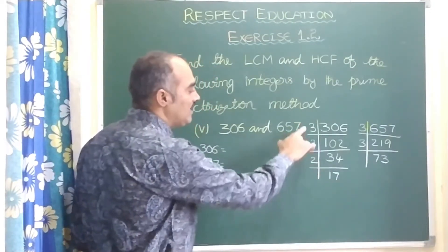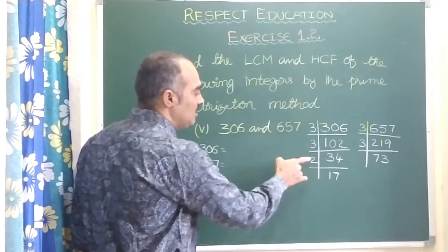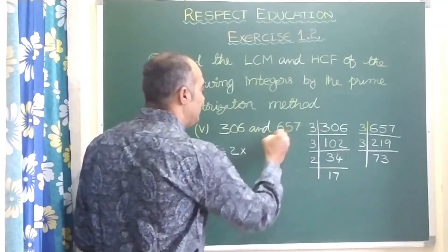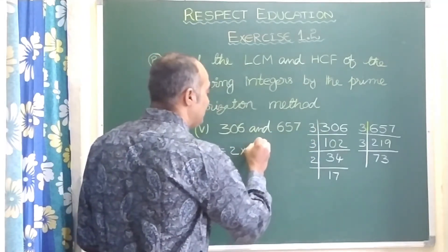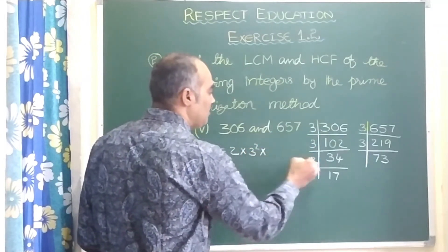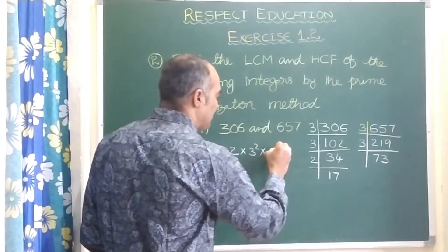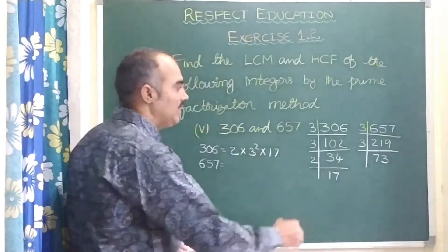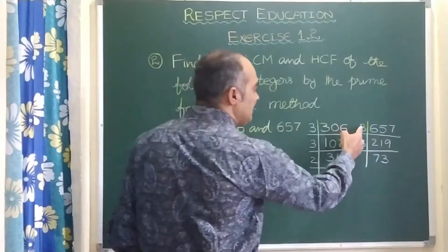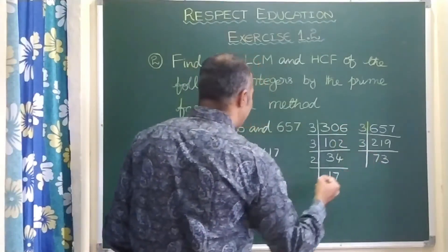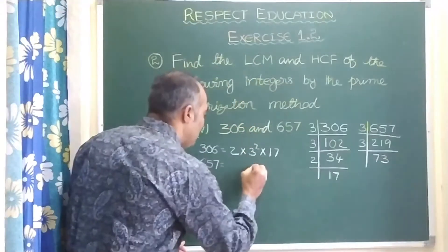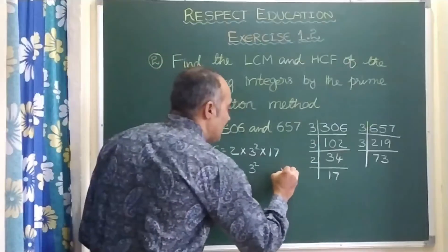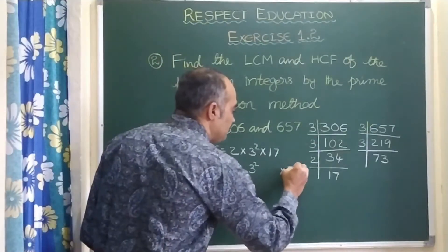Better if we write in ascending order. So first write 2 into 3 square into 17. For 657, this is 3 square into 73. See, below 3 square — I mean 3 square alone — and 73, I am writing separately.